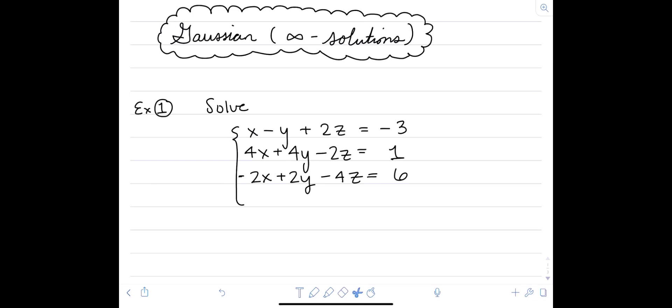In this video, we're going to assume the usage of a TI-84 calculator and include a demonstration of how to use that to speed this process along. So our first system that we're solving is x minus y plus 2z equals negative 3, 4x plus 4y minus 2z equals 1, and negative 2x plus 2y minus 4z equals 6.